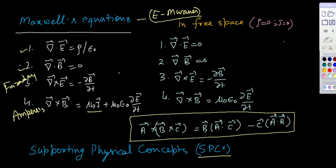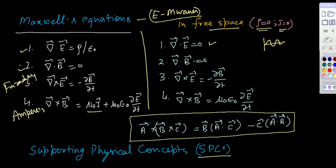We have to use these four equations in free space. Because electromagnetic waves travel in free space, for free space ρ is equal to 0 and J is equal to 0 — meaning volume charge density and current density are both zero. So Maxwell's equations in free space become: divergence of E is equal to 0, divergence of B is equal to 0, Faraday's equation remains the same, and Ampere's law becomes del cross B equals μ₀ε₀ ∂E/∂t.